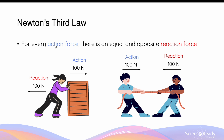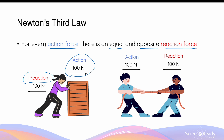Newton's third law states that for every action force, there is an equal and opposite reaction force. Let's look through a few examples to understand it better. Let's say a person exerts a 100 N action force onto a box towards the right. Newton's third law states that the box also produces a reaction force of the same magnitude, which is 100 N, towards the left, on that person.